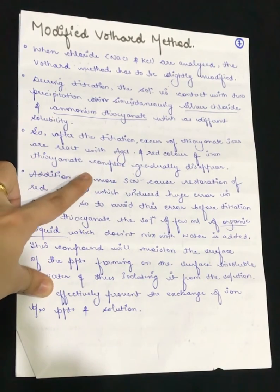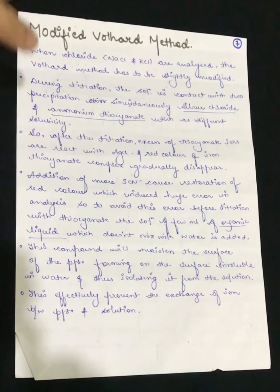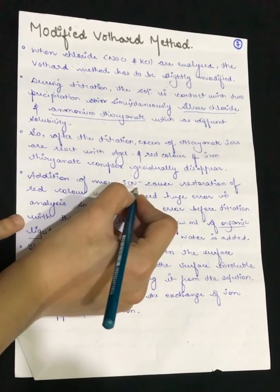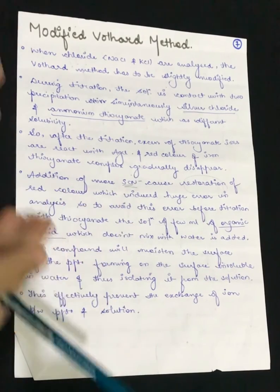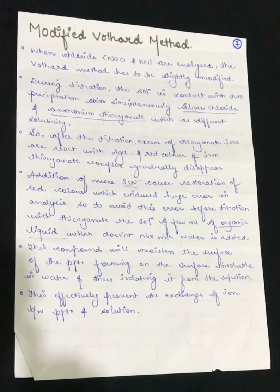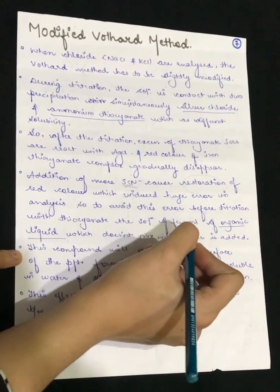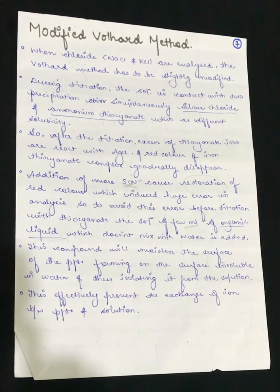In excess of thiocyanate ions, they react with the AgCl precipitate, and the red color of the iron thiocyanate complex gradually disappears. This means the thiocyanate ions are reacting with silver chloride rather than with Fe³⁺. Addition of more thiocyanate then restores the red color, inducing a huge error in the analysis — even a small reading error is magnified. So we need to avoid this error.